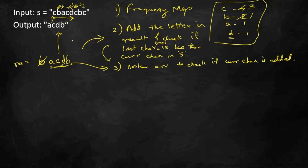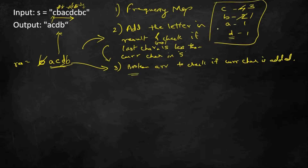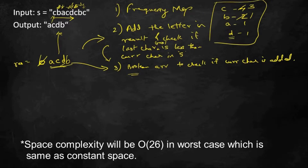For this operation — removing the last character and adding a new one — the data structure that supports this in O(1) time is either a linked list or a stack. Going through all characters is O(n) time. The additional space for the boolean array and frequency map is O(n) in the worst case. So overall time complexity is O(n) and space complexity is O(n).